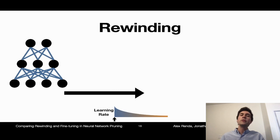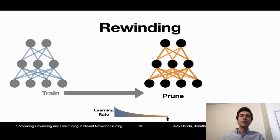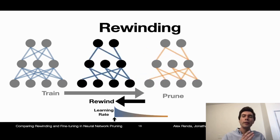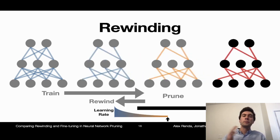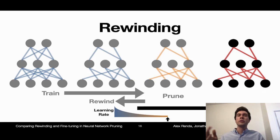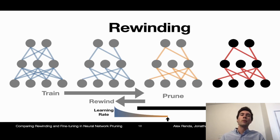When used as a retraining technique, the rewinding procedure follows. First, you train the network. Then you prune the network. And then you rewind the weights and the learning rate schedule to their values earlier in training, and then retrain those pruned and rewound weights using the learning rate schedule from the point to which the weights were rewound. It's important to note this rewinds both the learning rate and the weights, and so we call this weight rewinding.